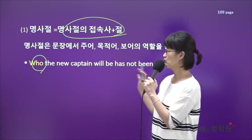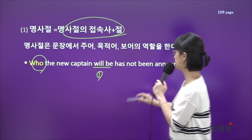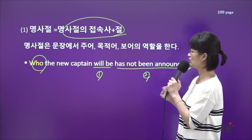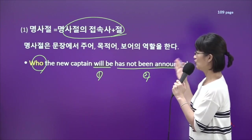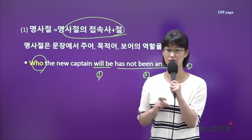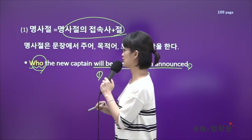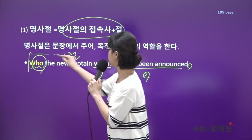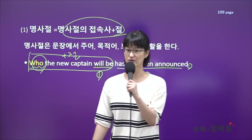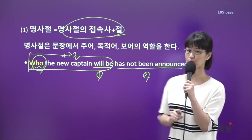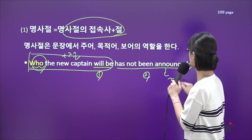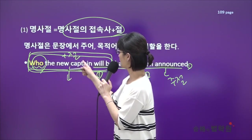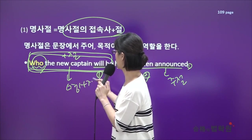이 마침표가 찍혀있는 한 문장 안에서 동사 두 개가 있는지 확인해보면, 'will be' 동사 하나, 'has not been announced' 두 번째 동사. Who가 동사 두 개, 절과 절을 연결하는 역할을 하는 게 맞네요. 그 다음에 모든 종속접속사는 뒤에 있는 절과 한 덩어리로 결합이 되어야 되니까, 명사절의 접속사도 종속접속사라 뒤에 있는 절과 하나로 묶어줍니다. 그 묶인 절은 종속접속사와 결합이 됐기 때문에 종속절이 되고, 묶이지 않은 뒤에 있는 절은 주절이 됩니다.